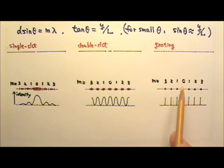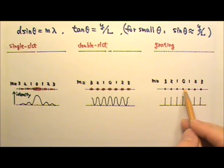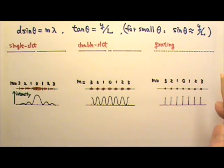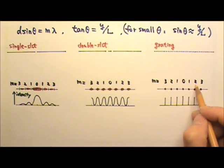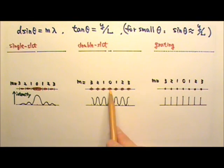For gratings, the pattern is very much like the double slit except instead of bright fringes, we just see bright spots on the screen. Of course, if our light source is a line source, then we would see bright sharp lines on the screen. For all of those, at m equals 0, at the center of the screen, it's always a bright fringe.